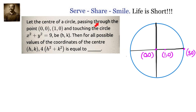Let the centre of a circle passing through the points (0,0) and (1,0) and touching the circle x² + y² = 9 be (h, k). So we have two circles: one circle with centre (h, k), and another circle with centre (0, 0) and radius 3. The first circle, having centre at (h, k), is passing through (0,0) and (1,0), and these two circles are touching each other.